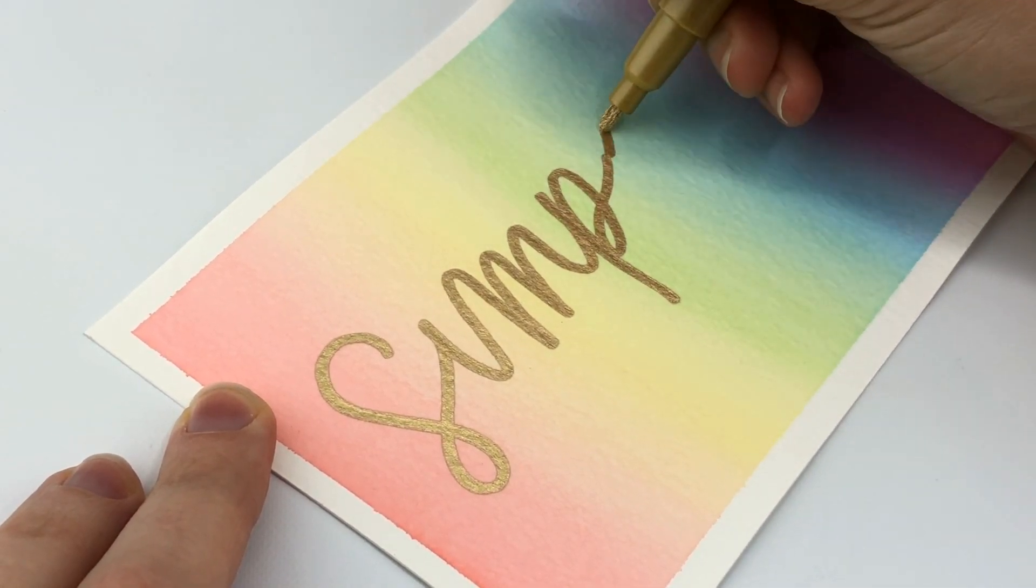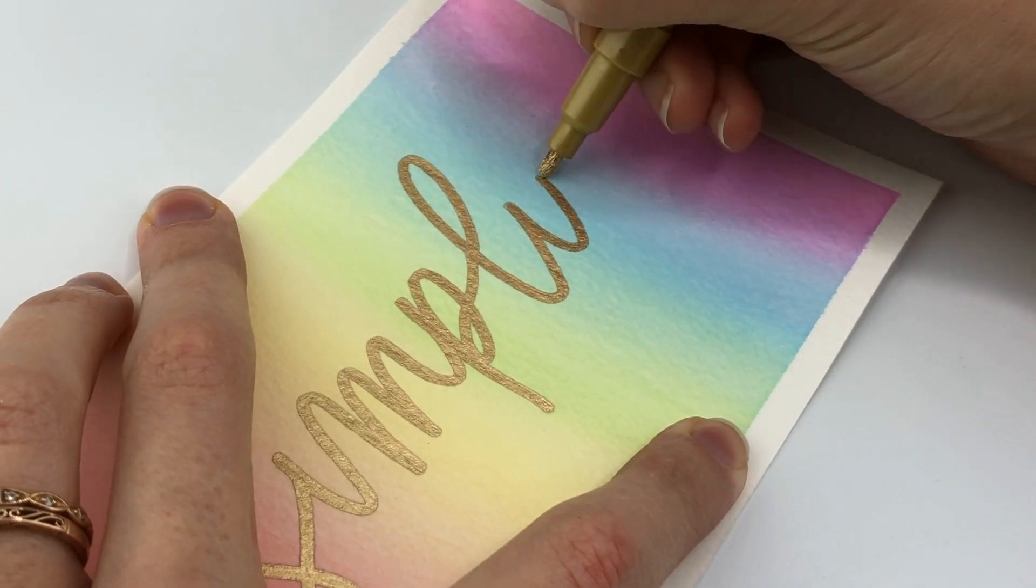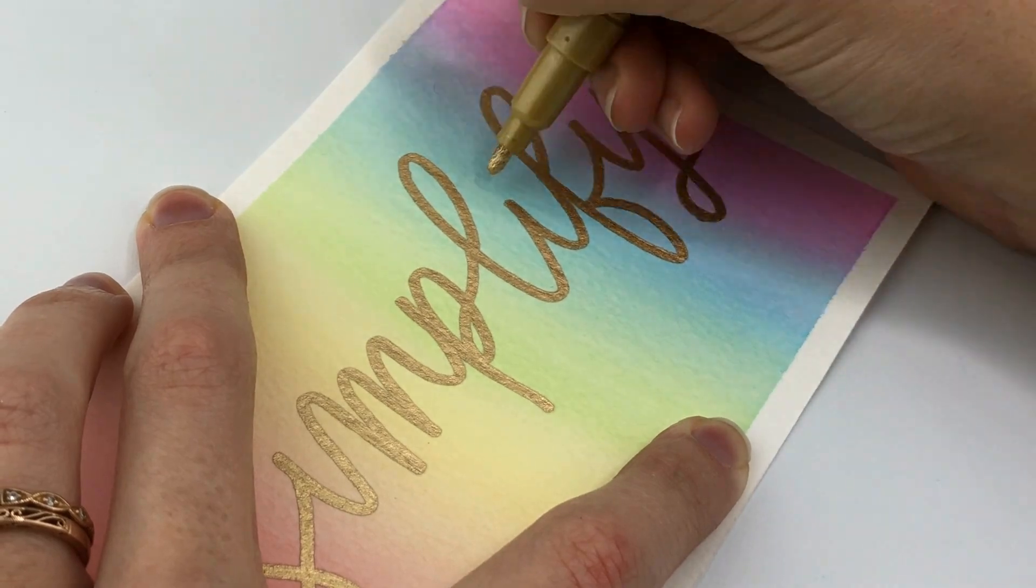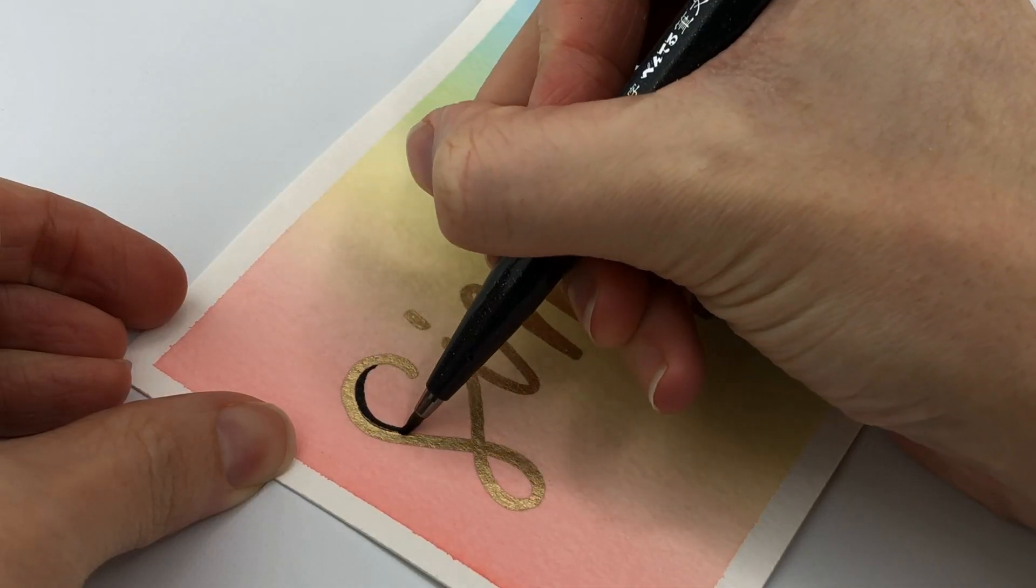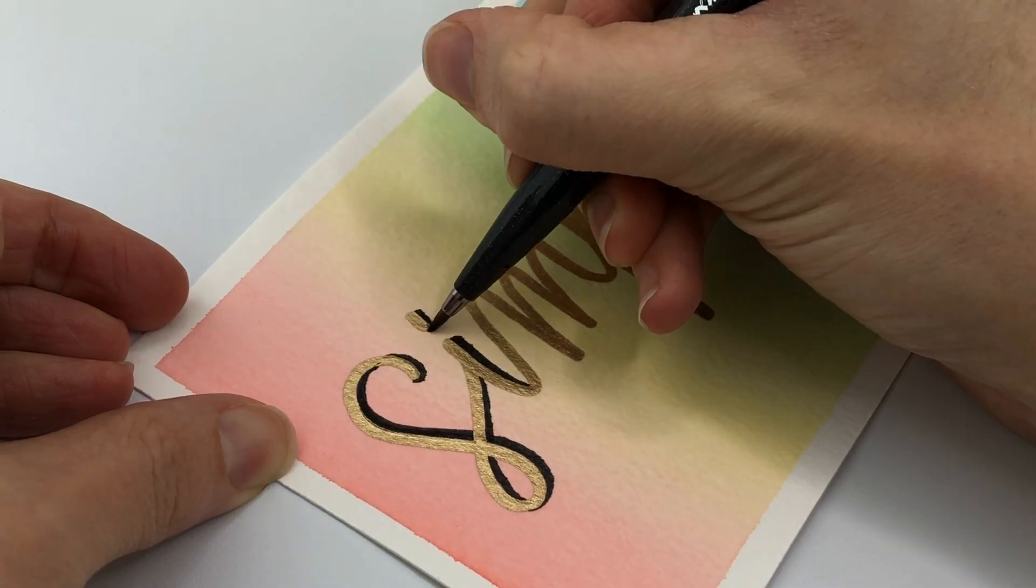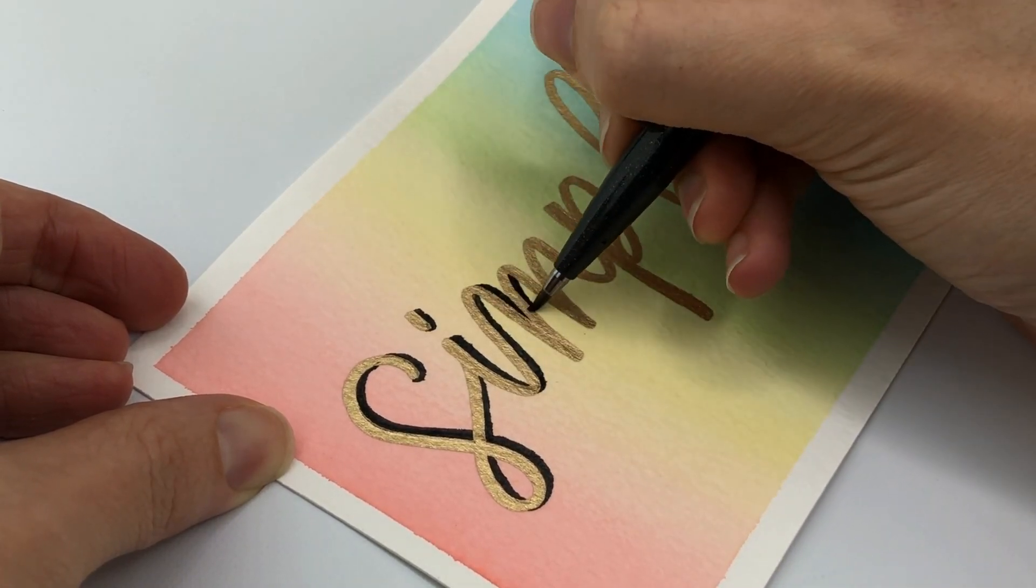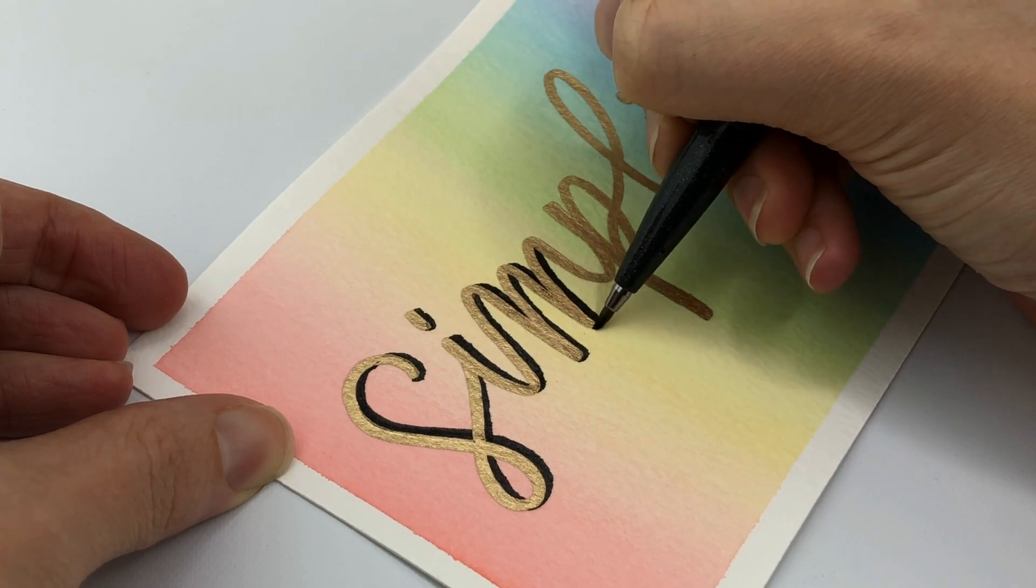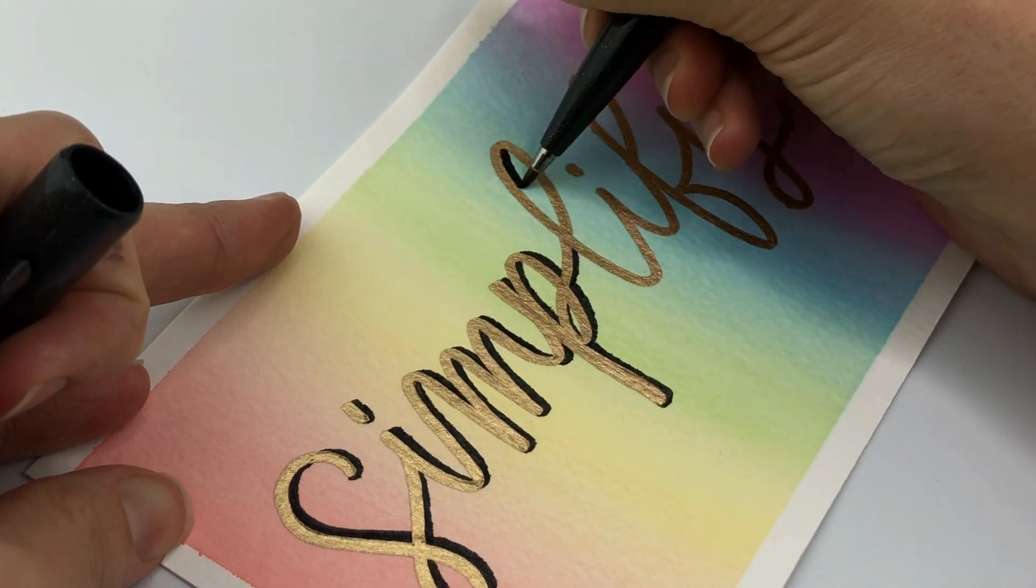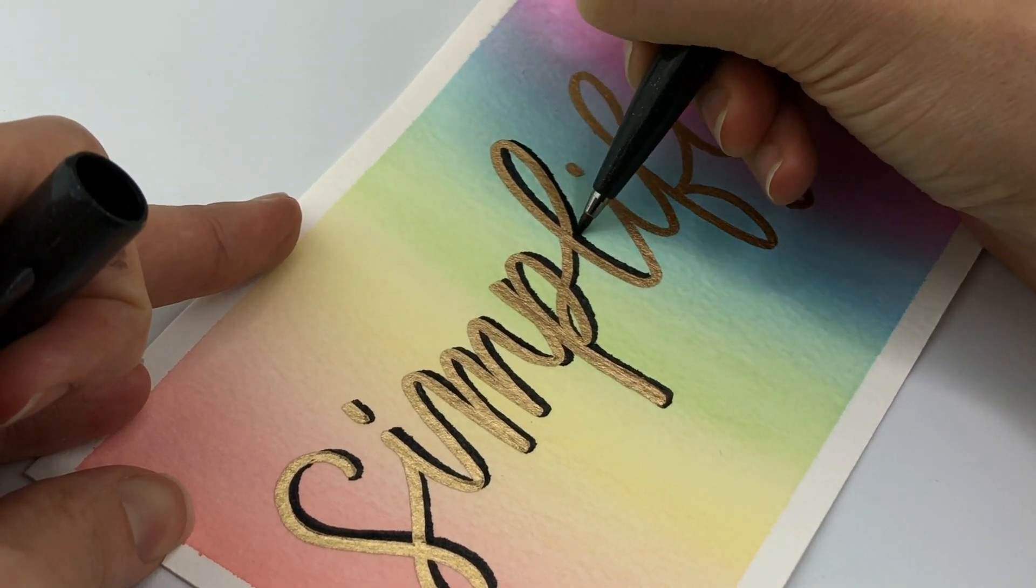For the word simplify here I'm using my Marvy Deco Color gold pen. It's currently my favorite gold pen. I also added some shadows with my Pentel Touch brush pen. Adding shadows is a great way to make your lettering really stand out. My super simple trick for shadows is add them to the right and under. If you need more details I do have a separate video on that.